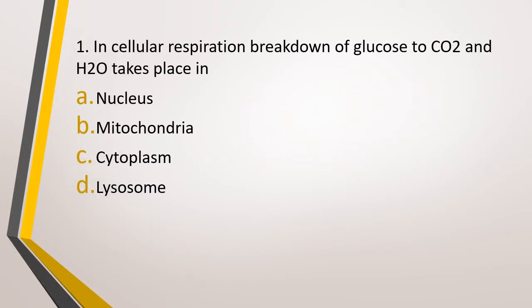Question number 1. In cellular respiration, breakdown of glucose to carbon dioxide and water takes place in? Option A: Nucleus. Option B: Mitochondria. Option C: Cytoplasm. Option D: Lysosome. The correct answer is option B, that is mitochondria. What happens in cytoplasm? Formation of pyruvic acid takes place in cytoplasm.